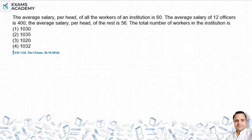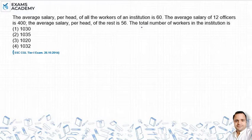Hello friends, I will solve this problem. The average salary per head of all the workers of an institution is 60. The average salary of 12 officers is 400. The average salary per head of the rest is 56. The total number of workers in the institution is?